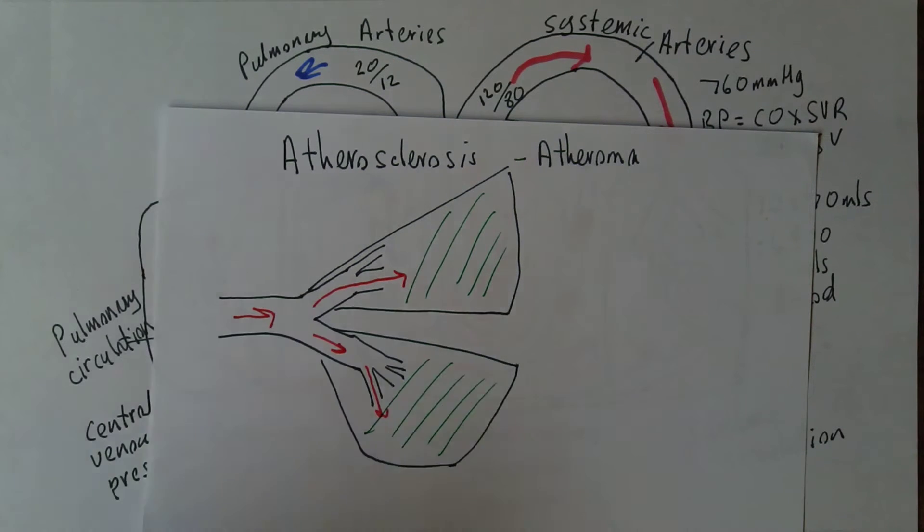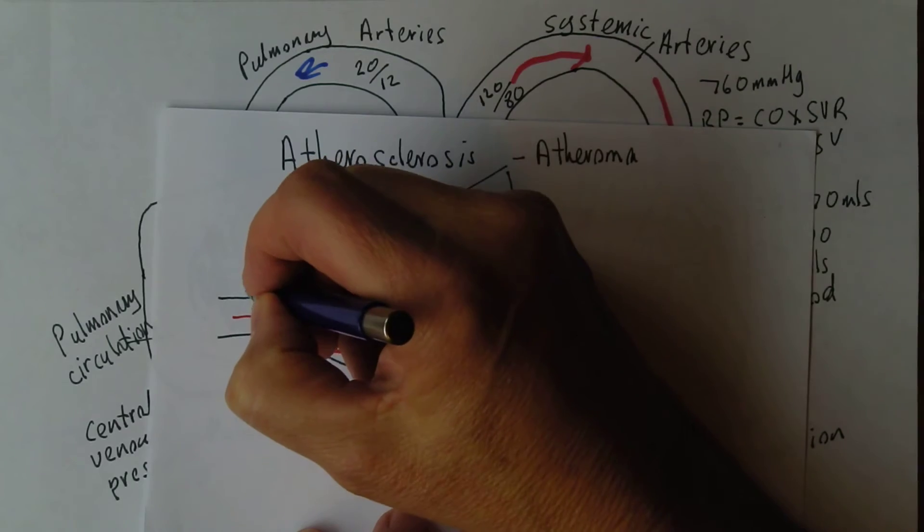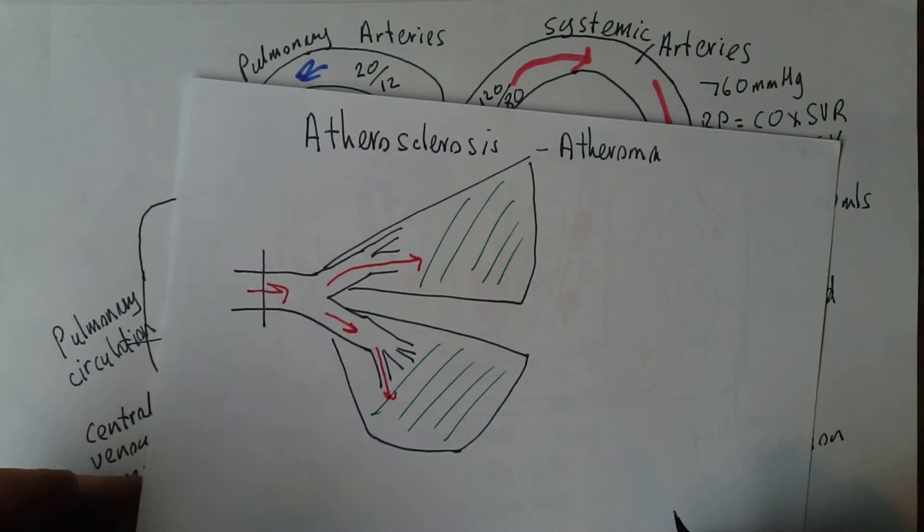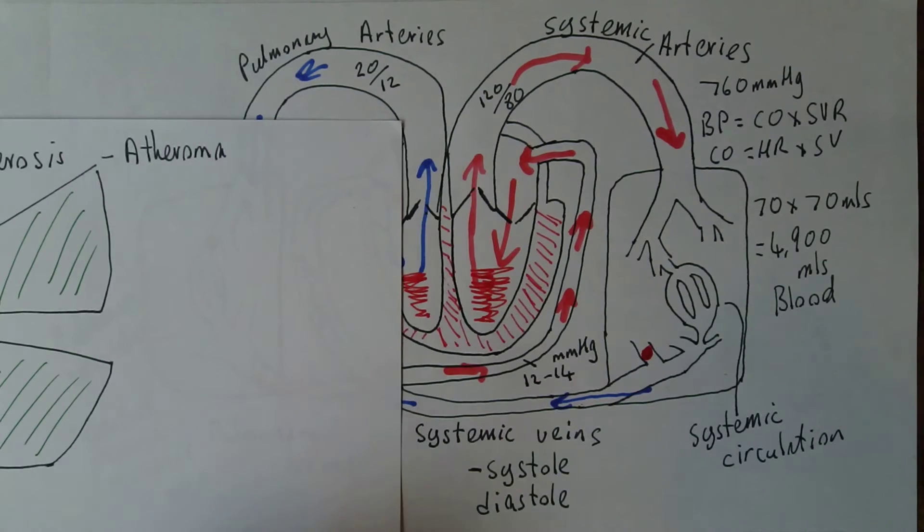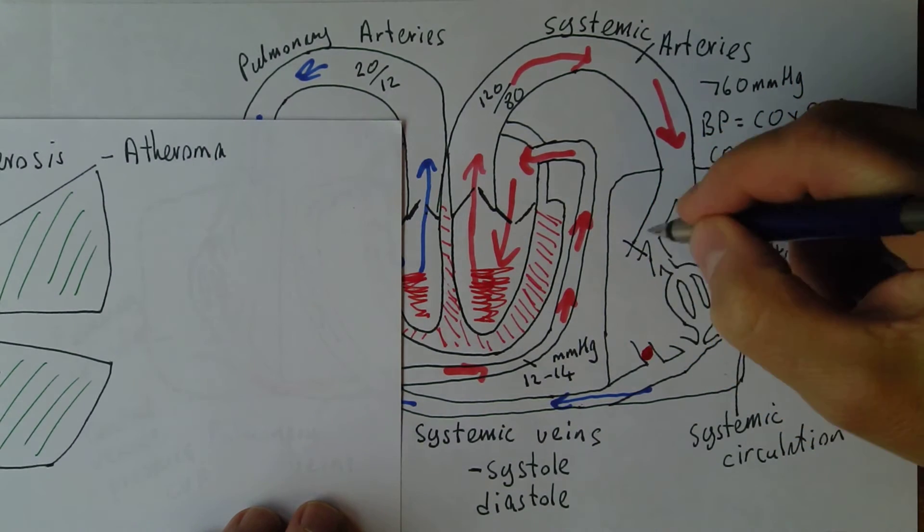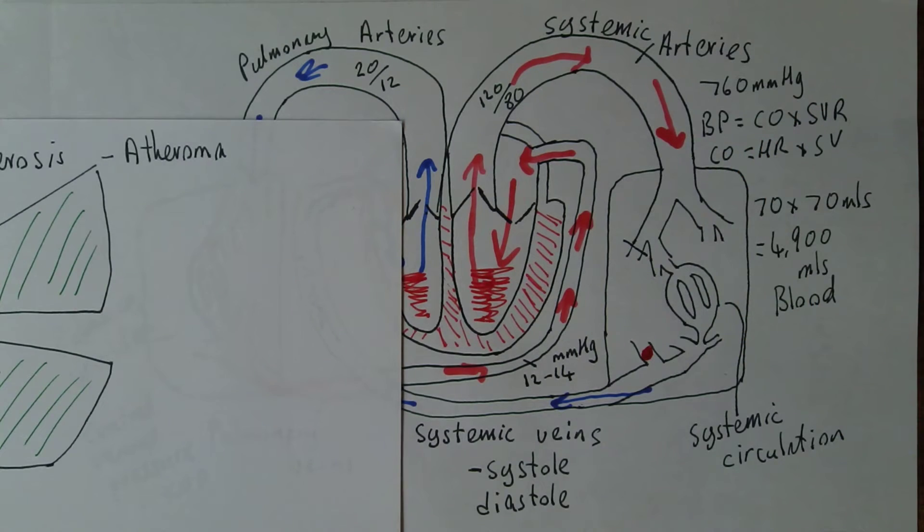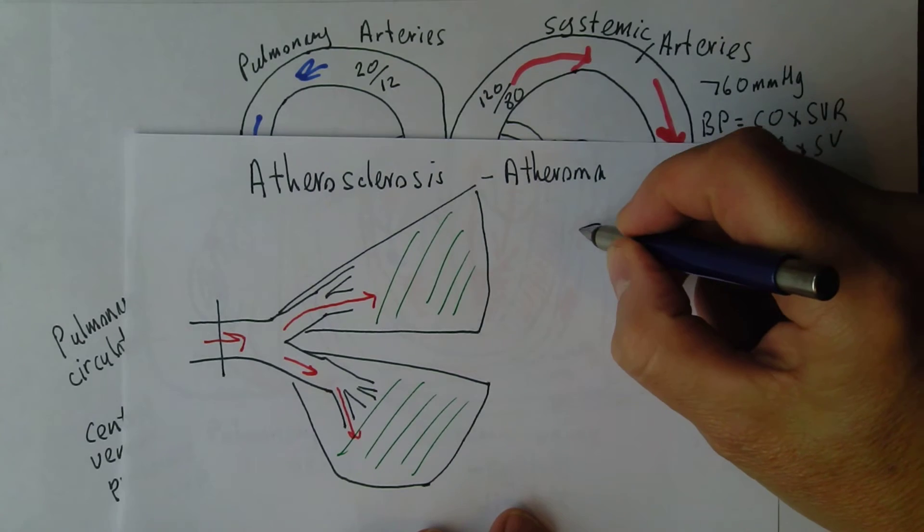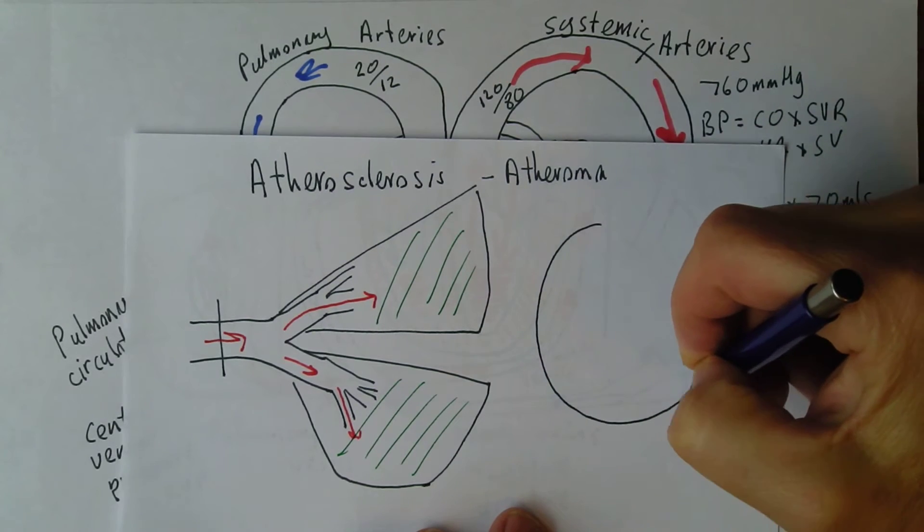Now what happens in atheroma, if we look at a cross section of this artery here. Remember we're looking at a systemic artery. If we relate this to our original diagram, we could be looking at an artery here supplying blood into the systemic circulation. That's got three layers to the arterial wall.